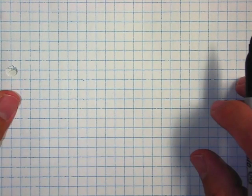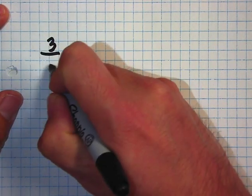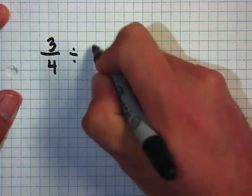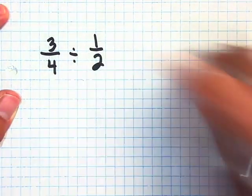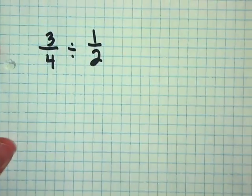On to the next problem. For this problem I have three over four divided by one over two. So three-fourths divided by one-half.